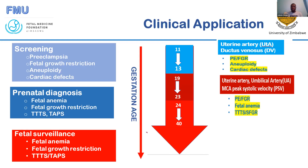The uterine artery Dopplers, as well as the ductus venosus, play an important role in preeclampsia, FGR, aneuploidy, and cardiac defects. If there is reversal of flow in the ductus venosus waveform, this points toward potential cardiac defects. The patient will need to be scheduled for a formal fetal echo.